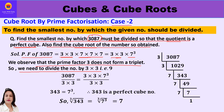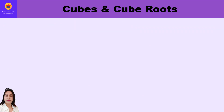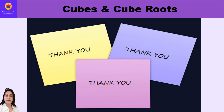Since the prime factor 3 does not form a triplet, 3 × 3 is extra. We need to divide the number by 3 × 3, that is 9, to get a perfect cube. So 3087 ÷ 9 = 343, and on the right-hand side the two 3s cancel, leaving 7 cube. So 343 is a perfect cube. The cube root of 343 is the cube root of 7 cube, which is 7. So the smallest number to divide by is 9, and the cube root of the resulting perfect cube is 7.